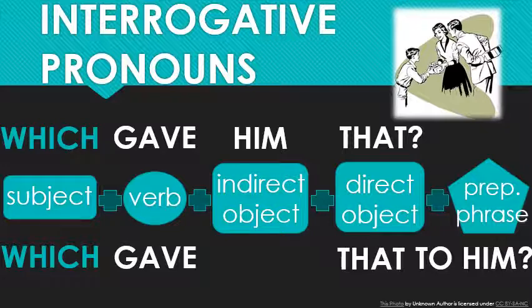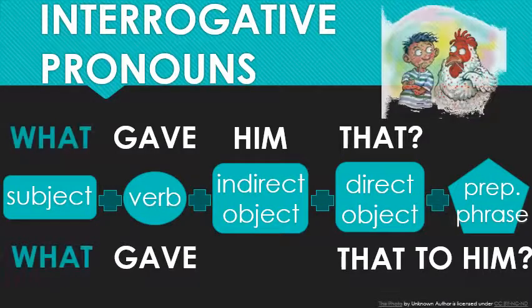'Which gave him that?' — so which parent gave him the present, because you're choosing between two options. 'What gave him that? What gave that to him?' Here I had to change the picture because what gave him something can't be the parents anymore. Maybe a virus gave him those symptoms — you're not talking about people; something non-human gave him that. Those are the subject pronouns.